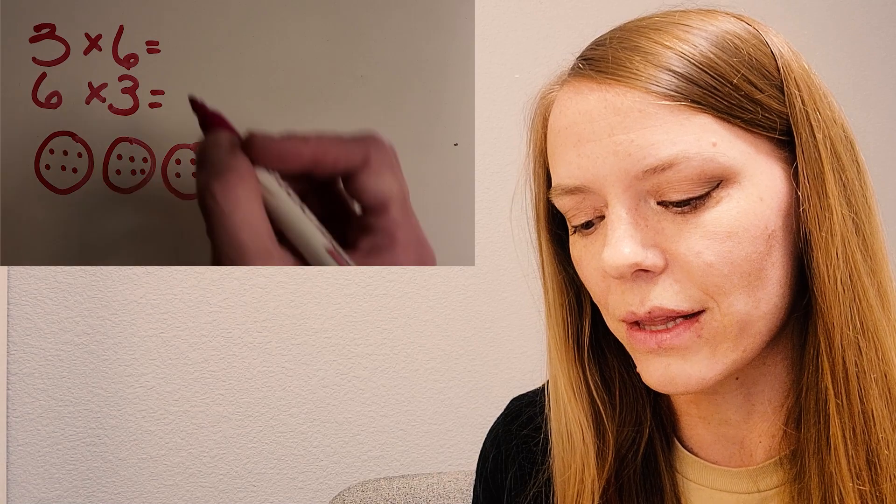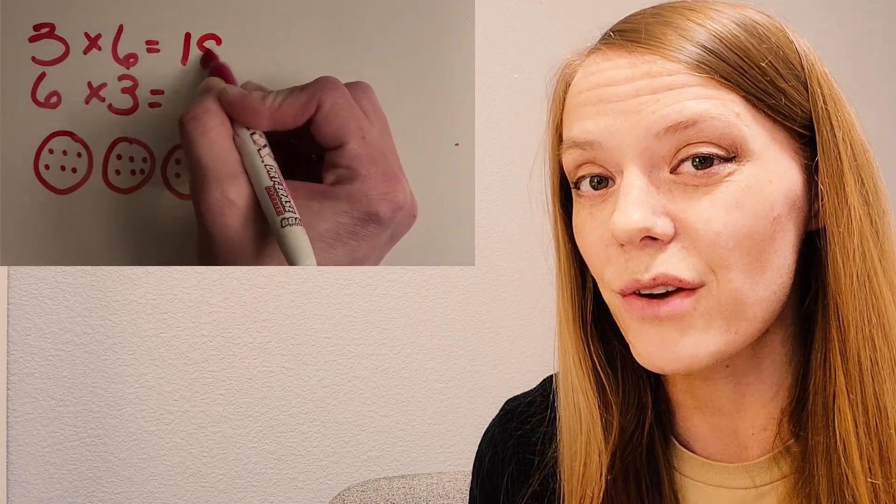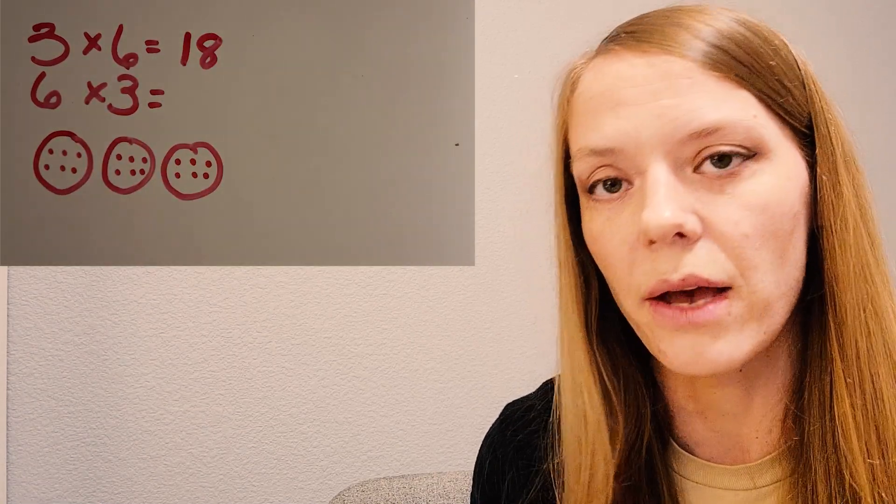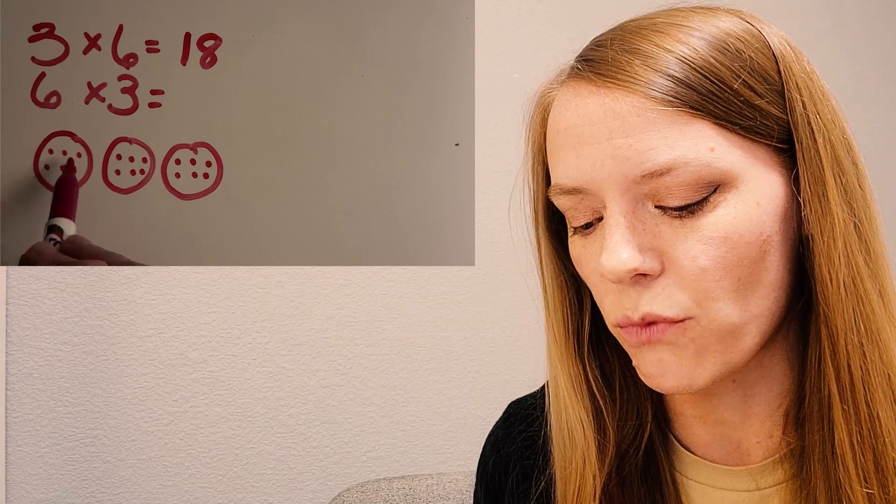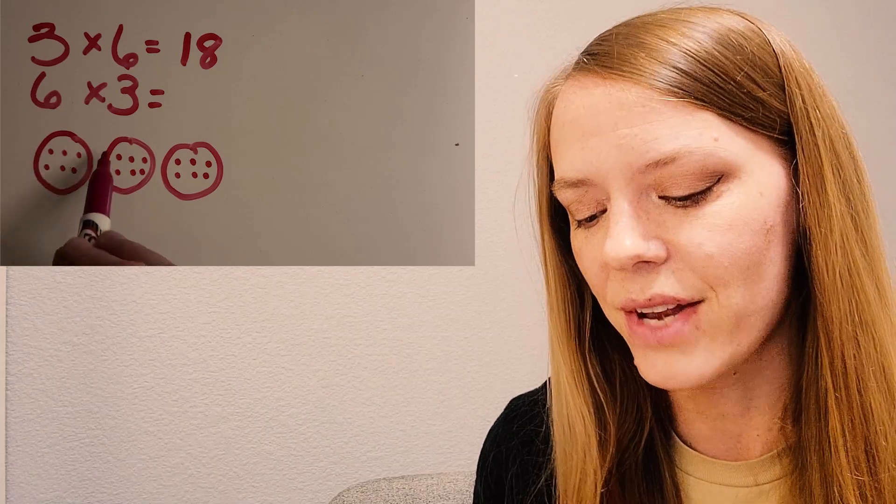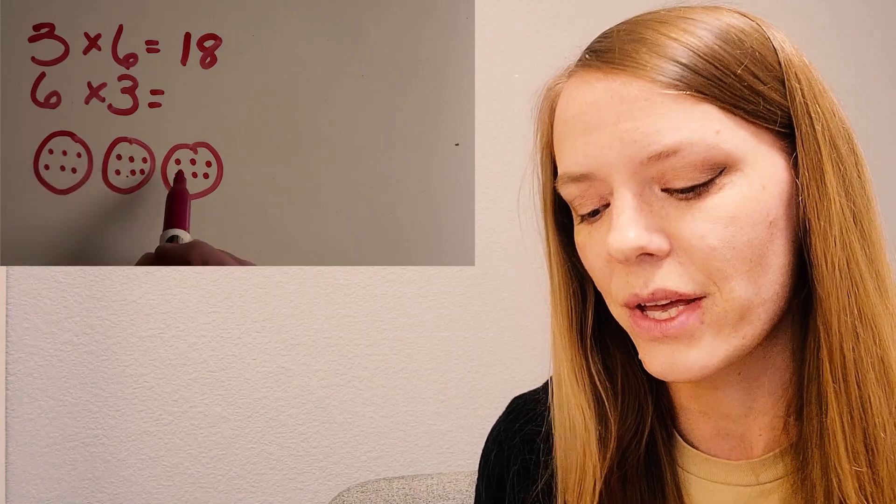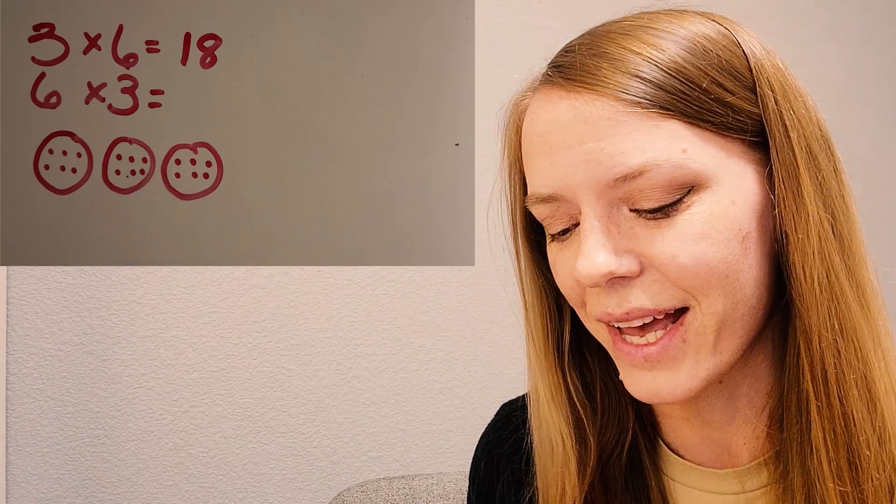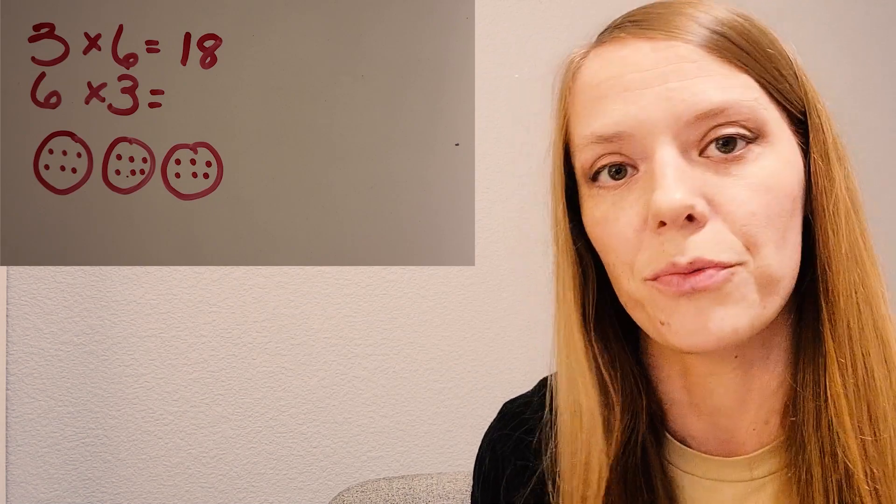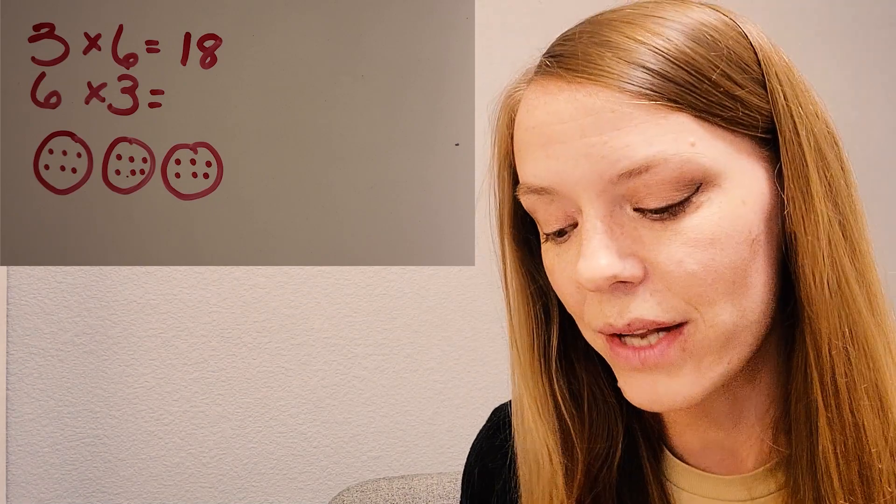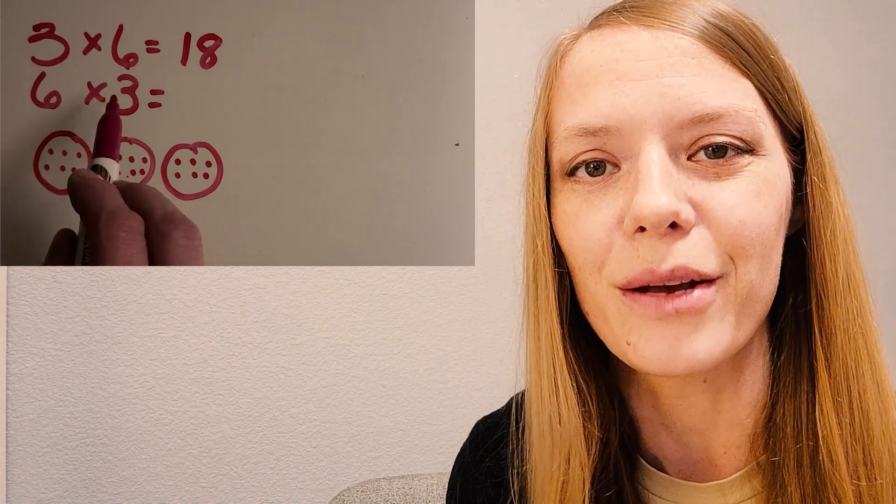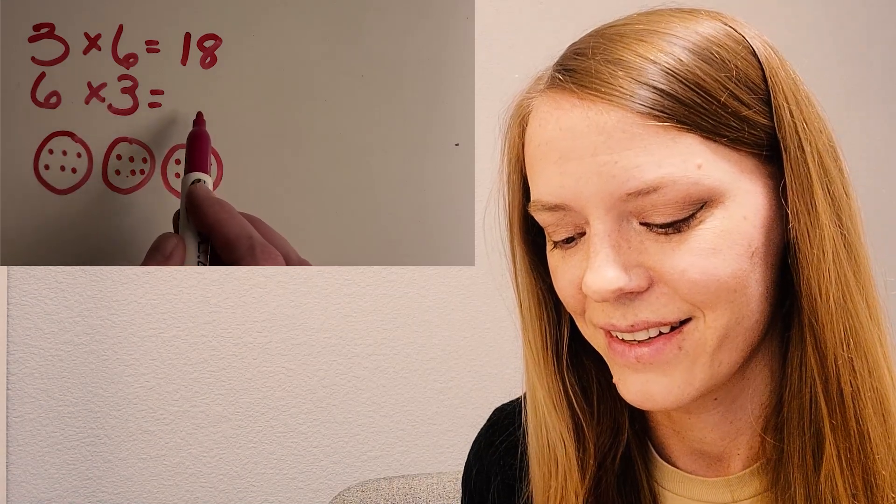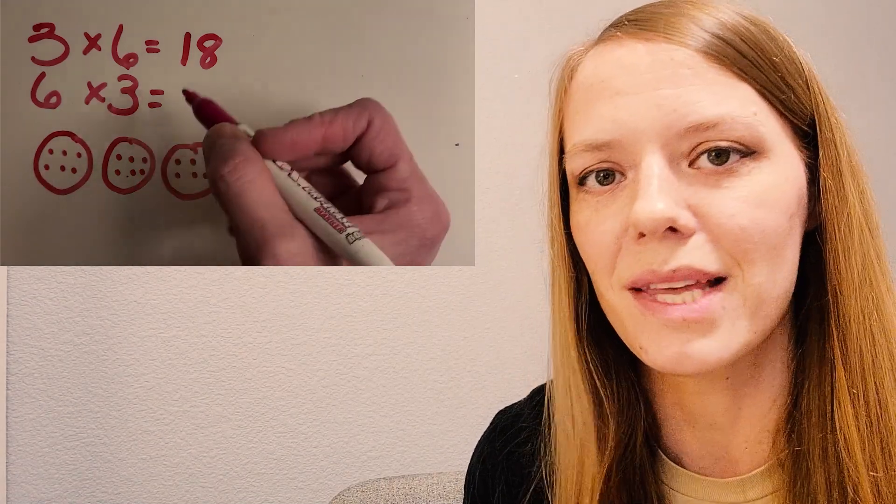And if you ever were feeling like you weren't really sure if that was the right answer, you could just count by one. So one, two, three, four, five, six, seven, eight, nine, 10, 11, 12, 13, 14, 15, 16, 17, 18. Okay, so 18 is my answer to three groups of six. What does six groups of three equal? Okay, awesome. Same thing, 18.